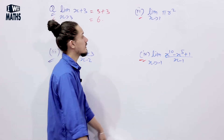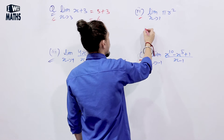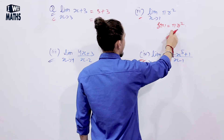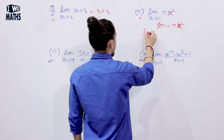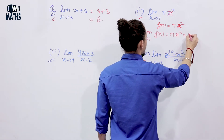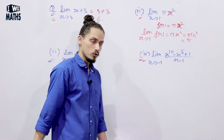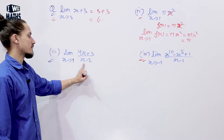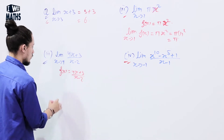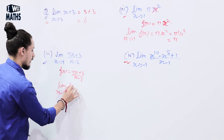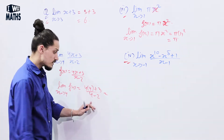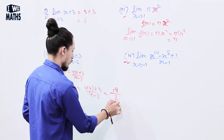Next: lim (x → 1) of πx². So f(x) = πx², and the limit = π × 1² = π. Next: lim (x → 4) of (4x + 3)/(x - 2). Here f(x) = (4x + 3)/(x - 2), so the limit = (4×4 + 3)/(4 - 2) = (16 + 3)/2 = 19/2.